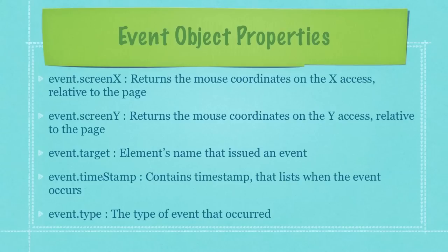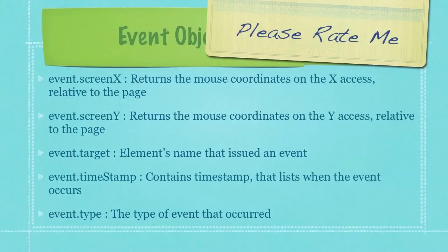event.target holds the value of the element's name that issued an event. timeStamp contains the timestamp which lists when the event occurs, including the year, month, date, time, and millisecond. event.type will tell you the type of event that occurred.